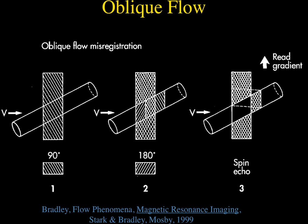Another artifact you need to be aware of is the misregistration that can occur when you have flow that's oblique to the slice plane. If we have flow in a vein that's oblique to the slice plane, at the time of the 90-degree pulse, only the spins in the quadrilateral space area are going to see the 90-degree pulse in the vein. By the time the 180-degree pulse comes along, that region has shifted in space because of flow.